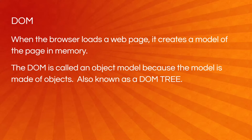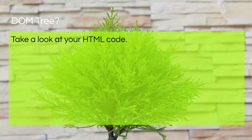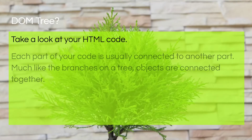Traversing the DOM tree basically means we go from one element to another. We talk about nested elements — this exists inside of this, and this other thing exists inside of another element. For instance, paragraph tags live in the body tag, and the body tag lives inside of the HTML tag. When we talk about the DOM tree, one part is connected to another much like branches on a tree, and the objects are connected together along these branches.